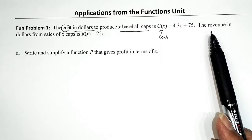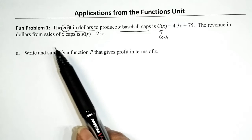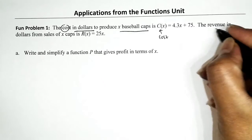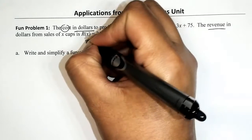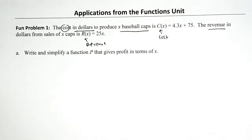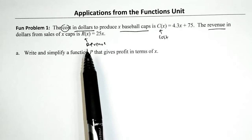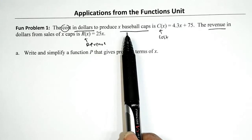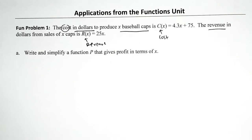The revenue in dollars from sales of X caps is given by this function: 25X. So to find the revenue we're gonna take 25 and multiply it by X, the number of baseball caps. Problem a reads: write and simplify a function P that gives profit in terms of X.